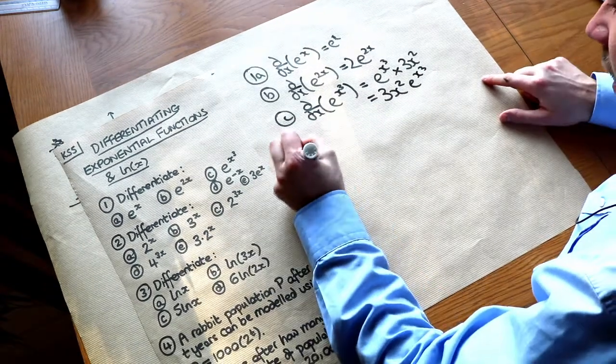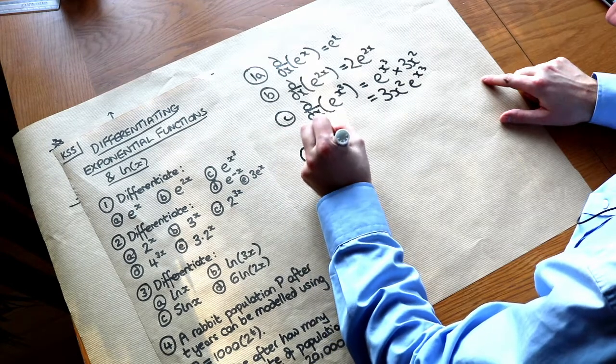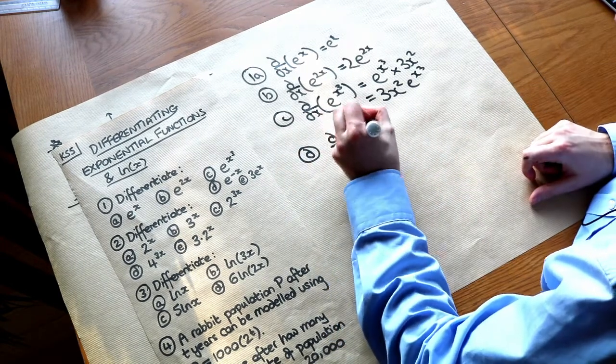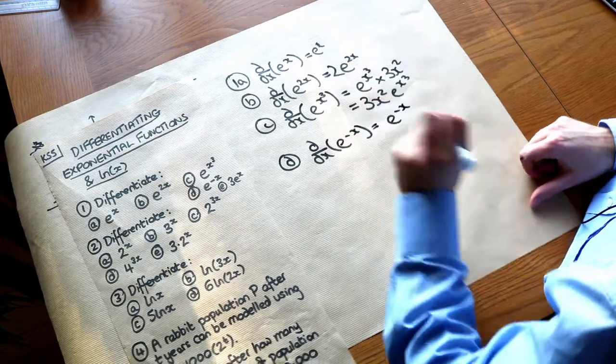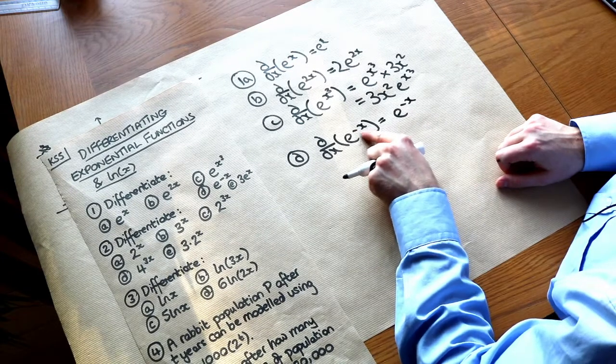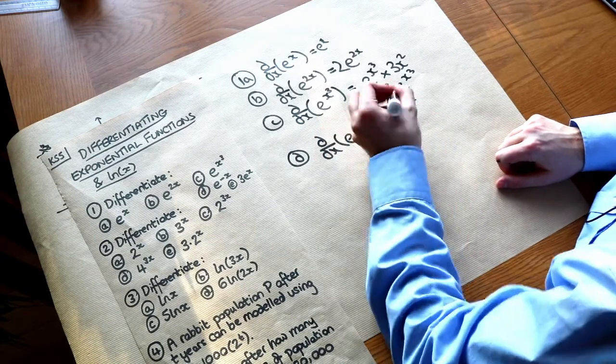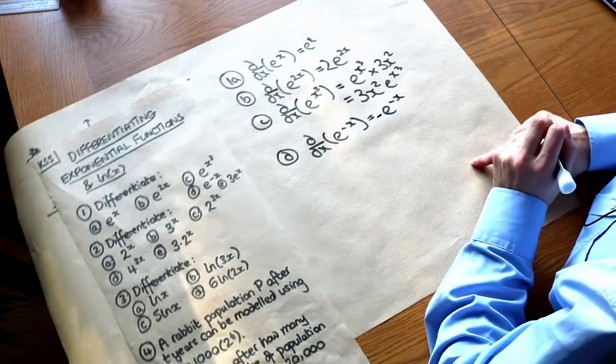And what about D? If we had e to the minus x differentiated with respect to x then we get the same thing e to the minus x but we times by whatever the minus x differentiates to which is minus 1. So we just get minus e to the minus x.